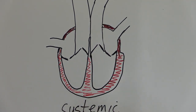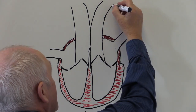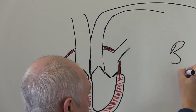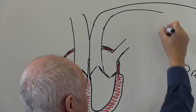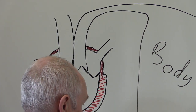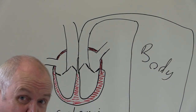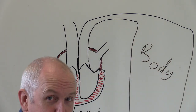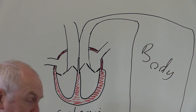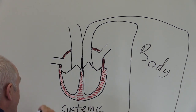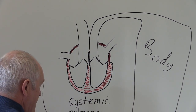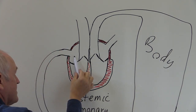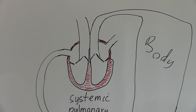Now the aorta will divide into smaller arteries and this will take blood to all of the body — that's your brain, your kidneys, liver, all of the major organs. And once the blood is circulated through the body it's going to return via the inferior and superior vena cava draining back into the right atrium.